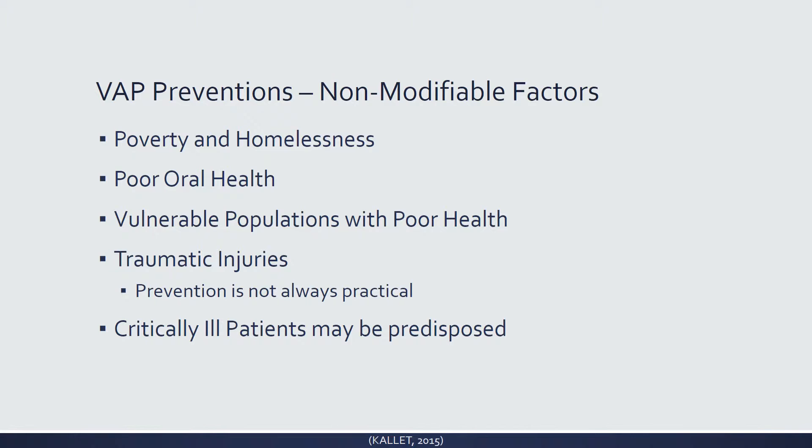Some risk factors are outside our control. VAP rates are higher in patients living in poverty or who are homeless. Patients with poor oral health status are at high risk because they have more bacteria in their mouth. Populations with poor baseline health status also tend to have higher VAP rates. Patients with traumatic injuries are at high risk because the injury itself may have caused aspiration, or our prevention measures may not be medically possible — for example, elevating the head of the bed isn't an option for head trauma patients.